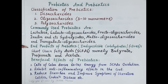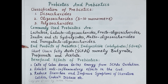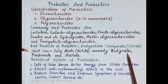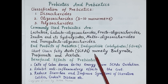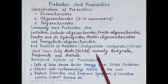Regarding the end products of prebiotics: beneficial bacteria in the GIT — specifically in the colon — use dietary fibers as a source of energy and convert these dietary fibers into short chain fatty acids, namely butyrate, propionate, and acetate. These short chain fatty acids are very beneficial for the body.